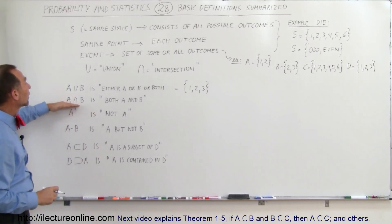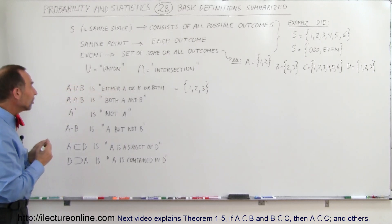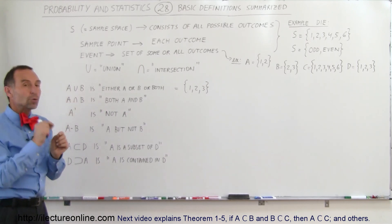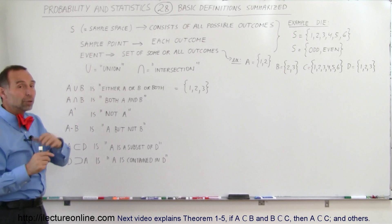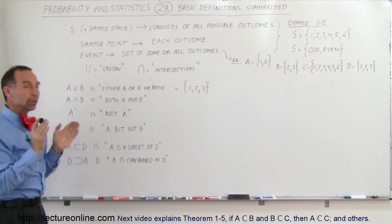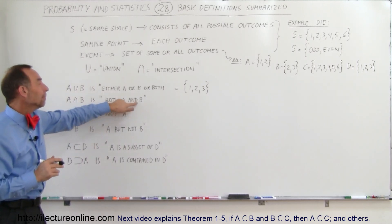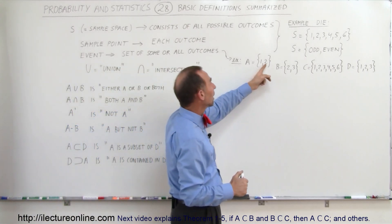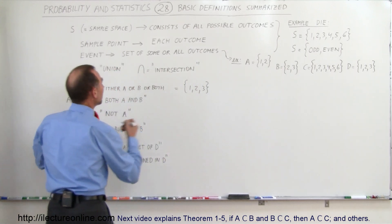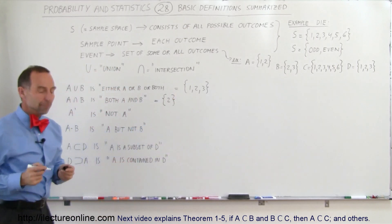Here we have A intersection B — the U that is now upside down. Intersection means whatever outcome we put here belongs to both A and B. If it only belongs to A, it doesn't belong there. If it only belongs to B, it doesn't belong there. Only if it belongs to A and B at the same time. There is only one outcome — outcome two — that belongs to both A and B. So A intersection B is equal to simply the outcome two.